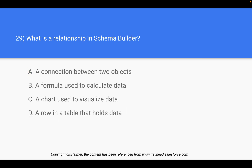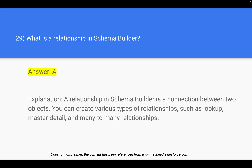Question 29: what is a relationship in Schema Builder? Options are: a connection between two objects; a formula used to calculate data; a chart used to visualize data; or a row in a table that holds the data. As discussed, a relationship is a connection between two tables, so the answer is option A. Schema Builder helps you customize and visualize objects, the relationships between them, and the fields within them.